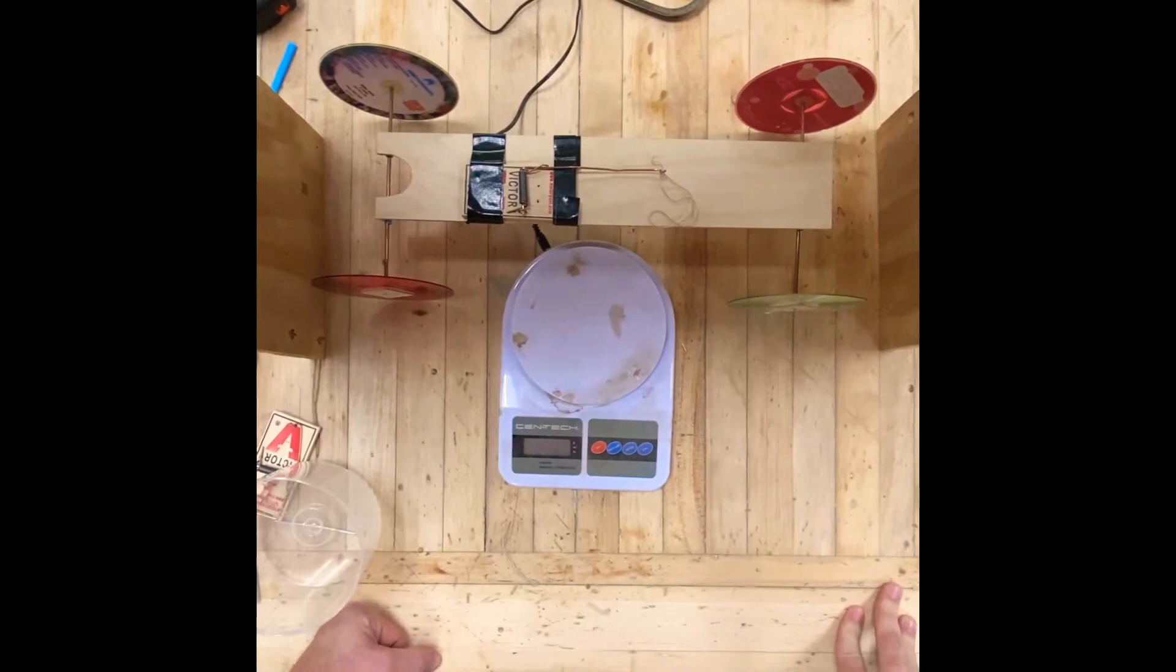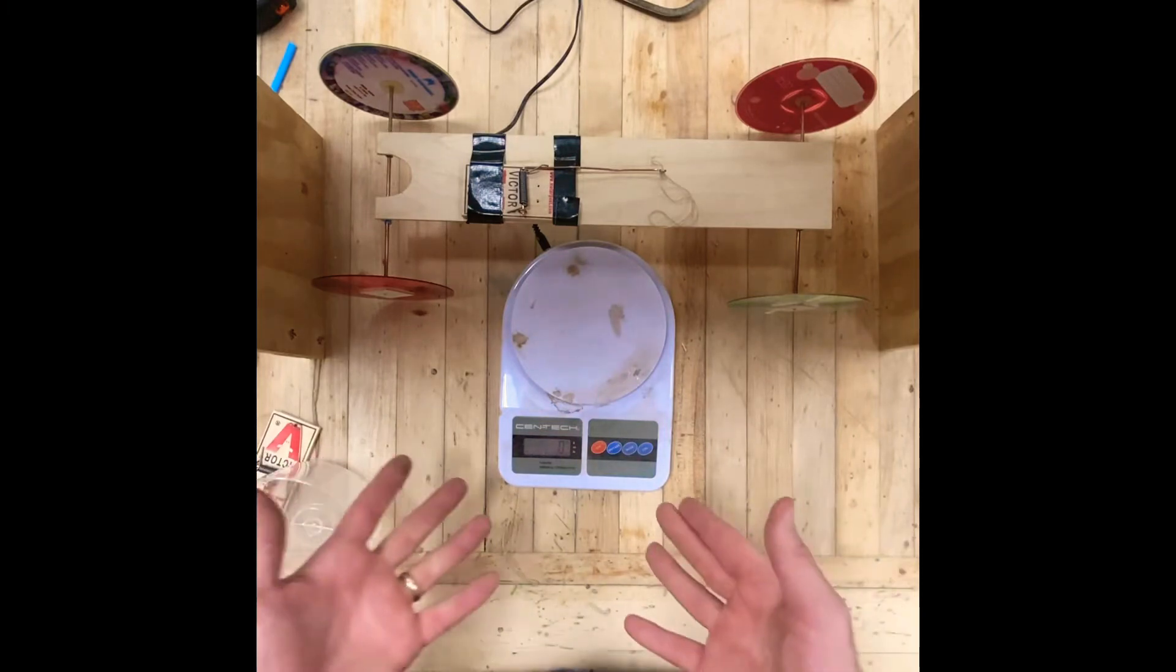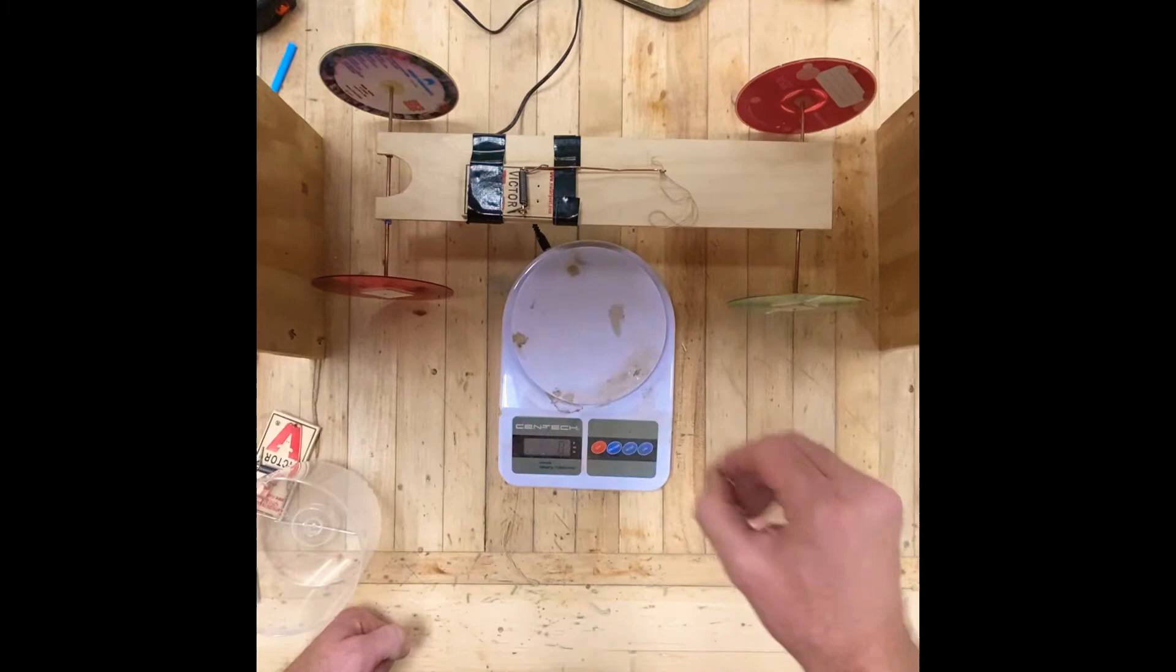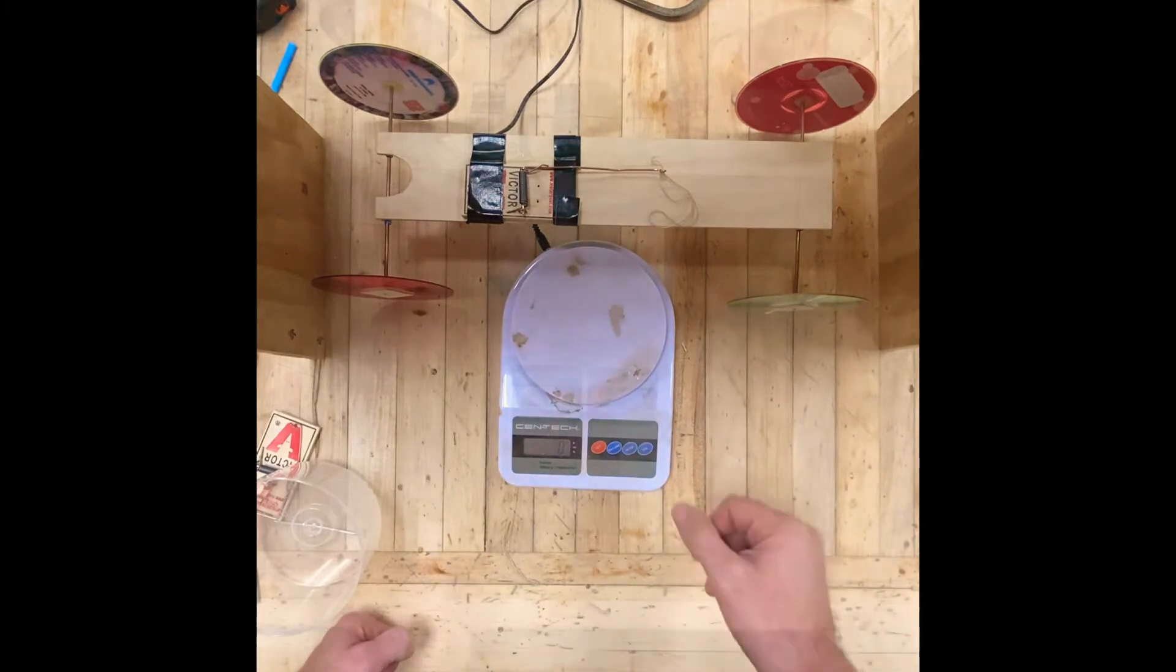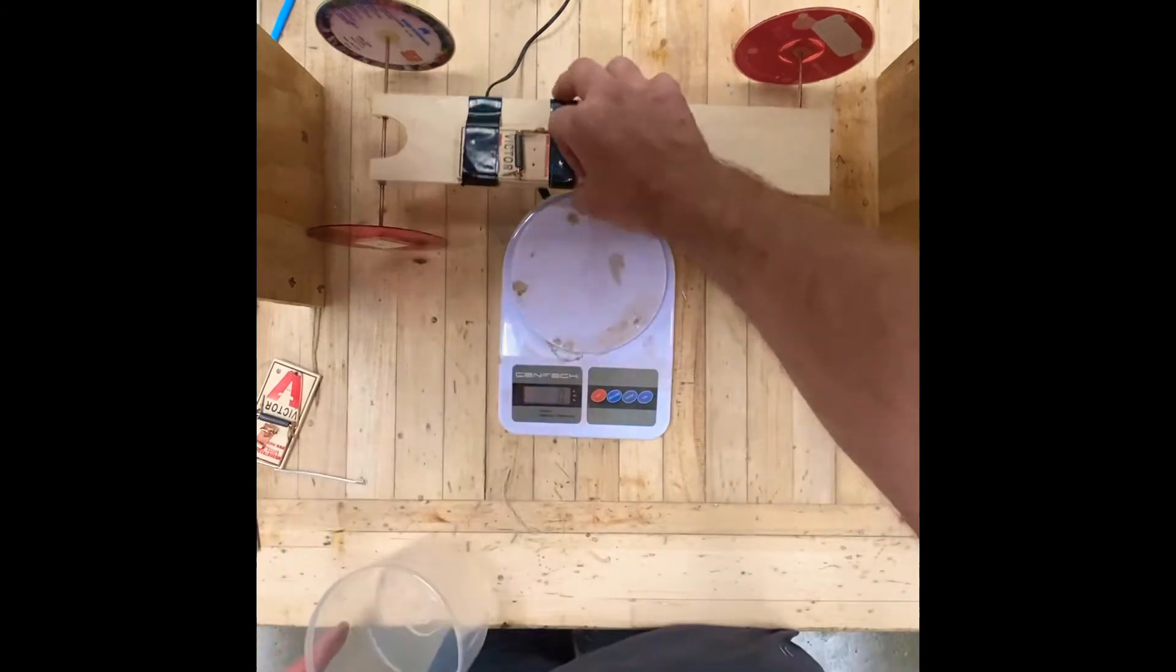The first thing to make your mousetrap car go faster is weight reduction. So what we're going to do right now is weigh this. I'm going to turn on my scale here. You don't have to check your weight, but for this purpose in this video we're going to do a little calculation here.